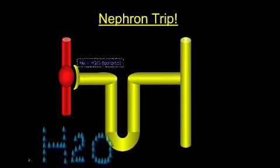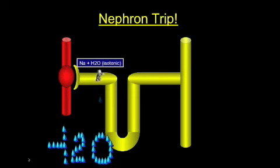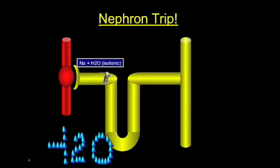And since we're on the topic of the kidneys, how about a little kidney physiology? Let's take a little trip through the nephron. The proximal tubule is where sodium is reabsorbed and water follows, so you get isotonic reabsorption. The filtrate starts at 300 milliosmoles and it remains at 300 milliosmoles.